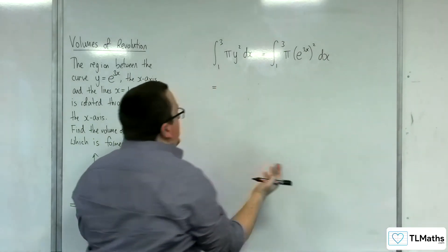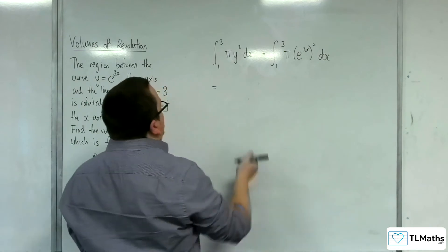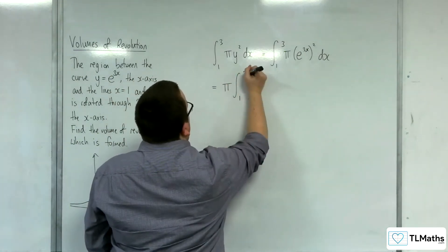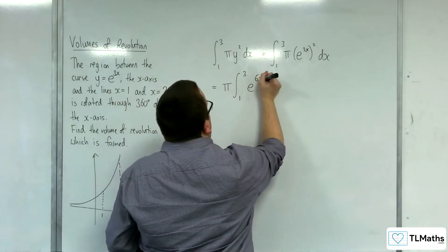We can bring the pi out of the integral or leave it inside. I generally prefer to bring it outside. So pi times the integral between 1 and 3 of e to the 3x squared, which is e to the 6x dx.